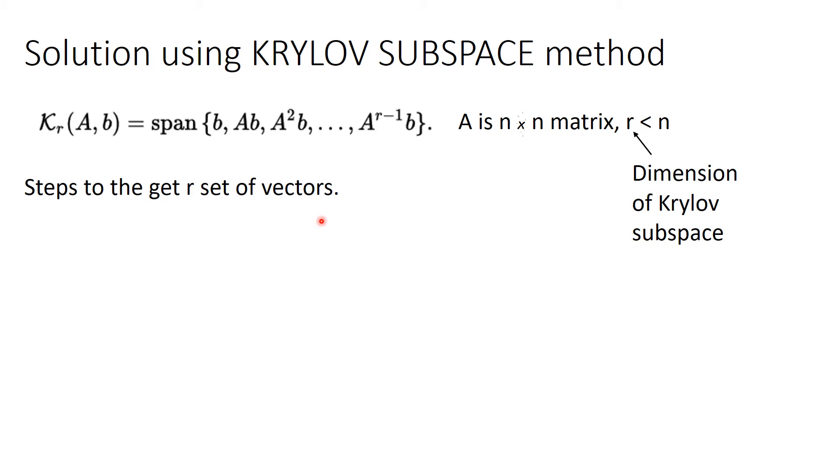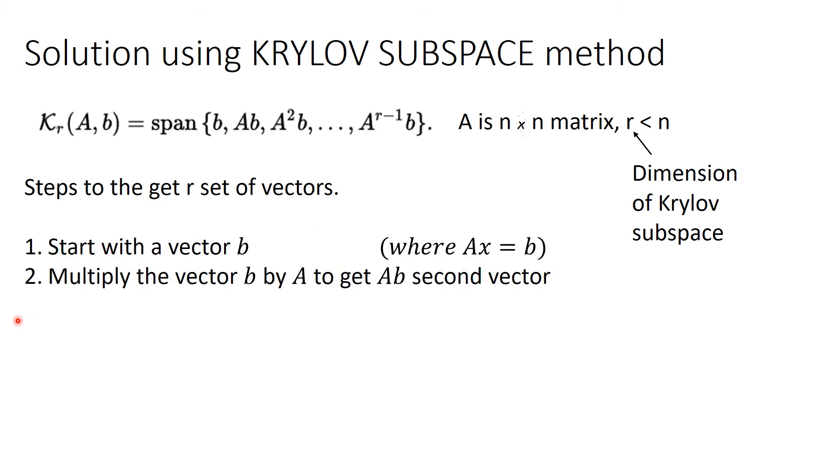Steps to get the r set of vectors: Start with the vector b. Multiply the vector b by A to get Ab, second vector. Multiply the vector Ab by A to get A square b. Repeat r minus 1 times.